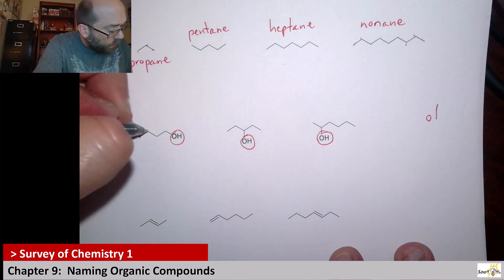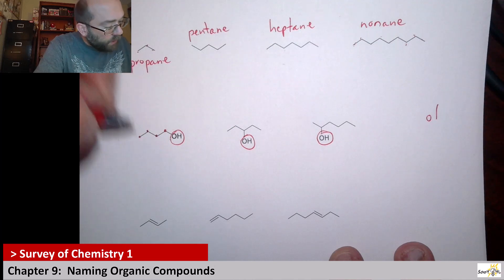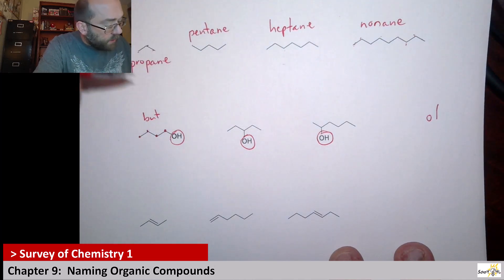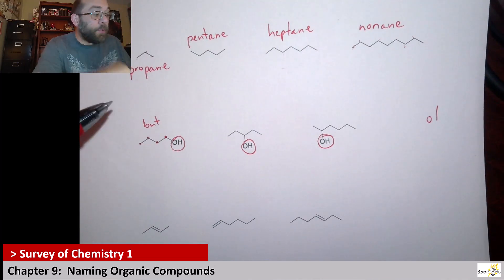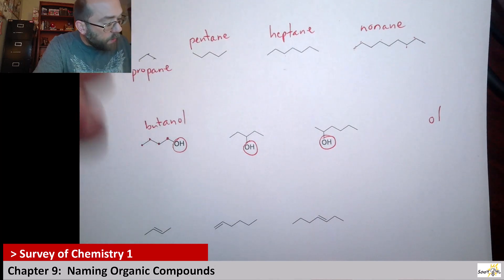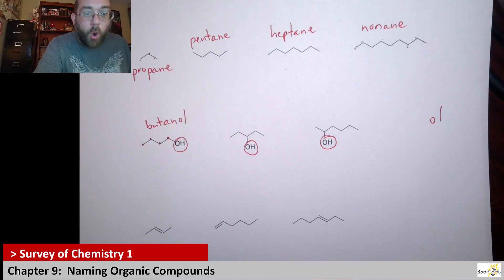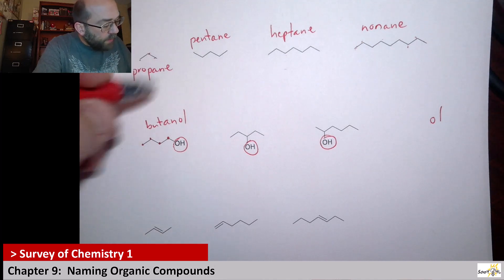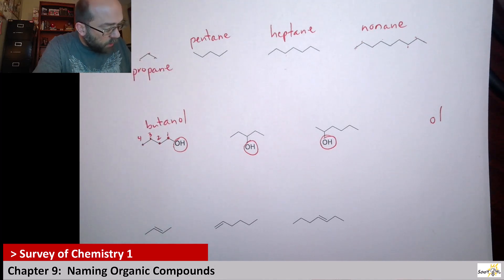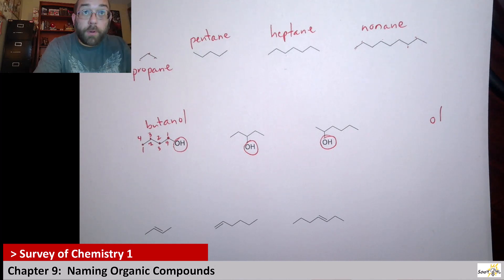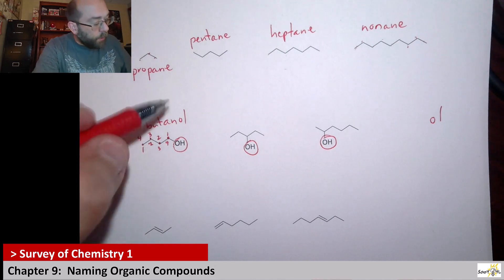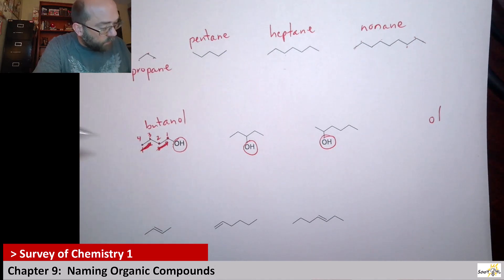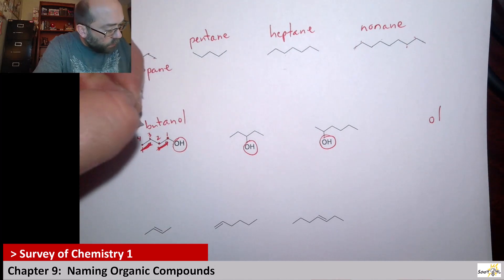Here we've got one, two, three, four — that's four carbons. With four carbons, we use bute. It's a chain, so it's not butane but it is butanol. The E in ane is dropped and we put O-L in its place. You have four different carbons, so you have to specify where the OH group is. The way IUPAC naming convention works, you want your group — in this case the alcohol — to have the smallest number possible. So we would call this 1-butanol.